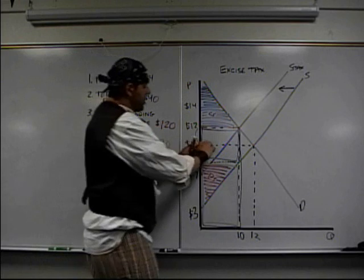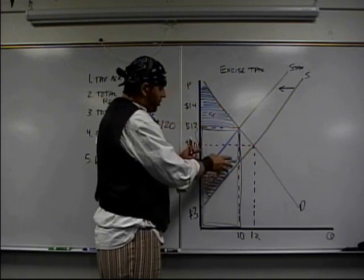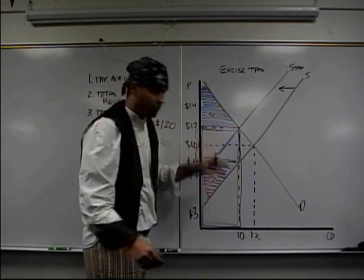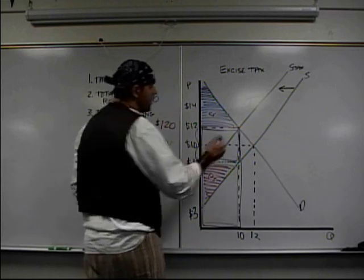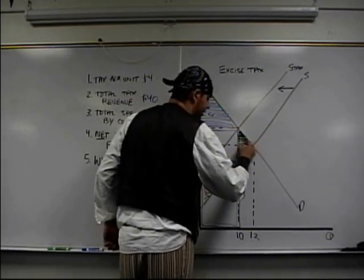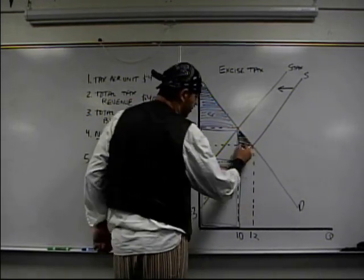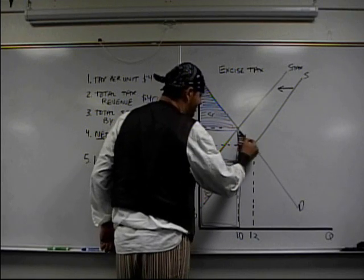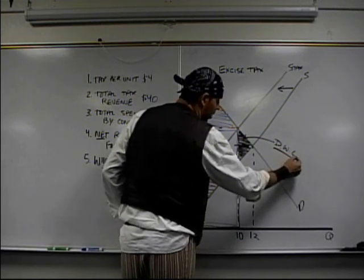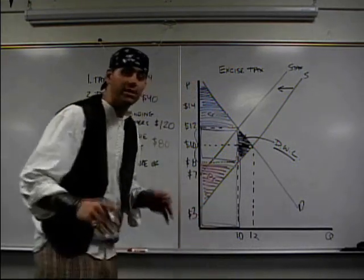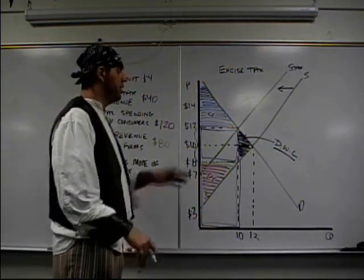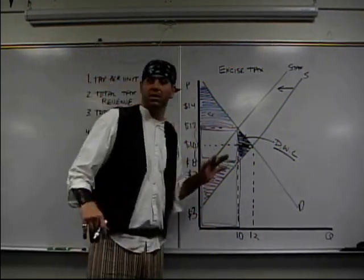But you can tell, producer surplus before was this big triangle. There's less producer surplus, less consumer surplus. The result is there's some consumer surplus that used to exist that doesn't, and some producer surplus that used to exist but doesn't, and that's called something, that's called deadweight loss. Deadweight loss is the lost consumer and producer surplus when the government has come in and done something to the market.